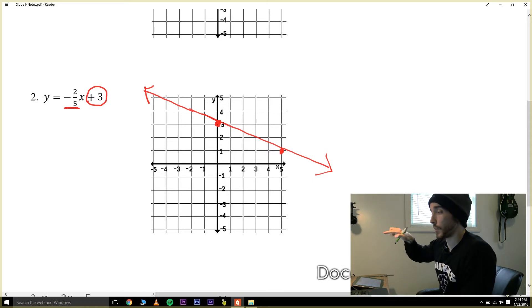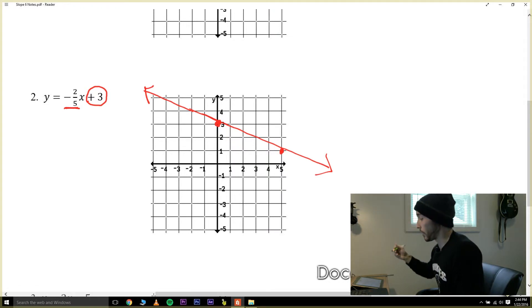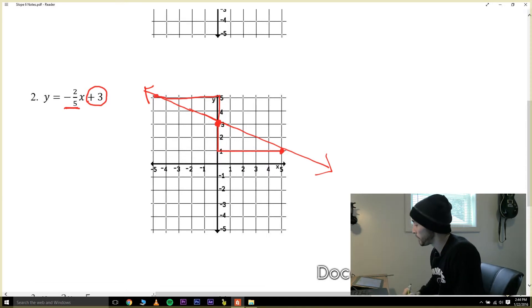Remember how we said on the previous problem if we couldn't count up and right we could also go down and left? See on this problem we went down two and right five. If for some reason we didn't want to do that you can always do the opposite and still end up on the line. I could have counted up two and left five. Sometimes by adding more dots before you draw the line it'll help you draw a line a little bit more accurately.